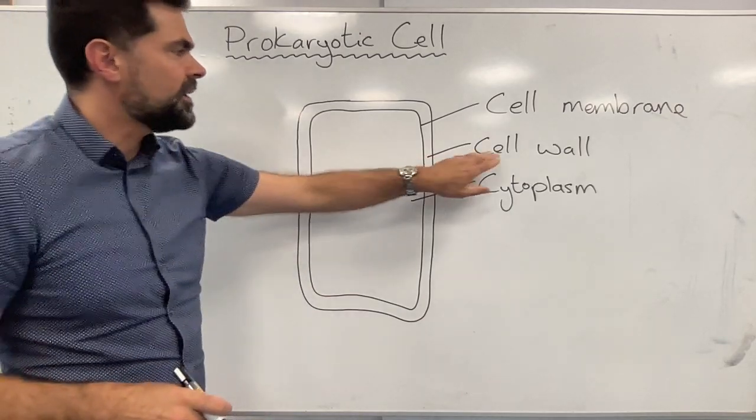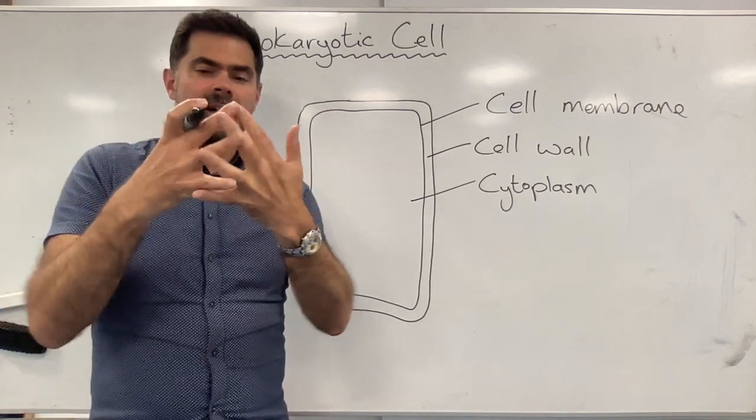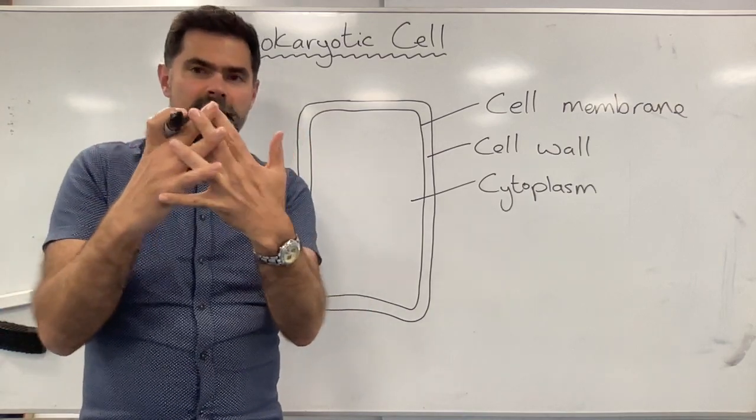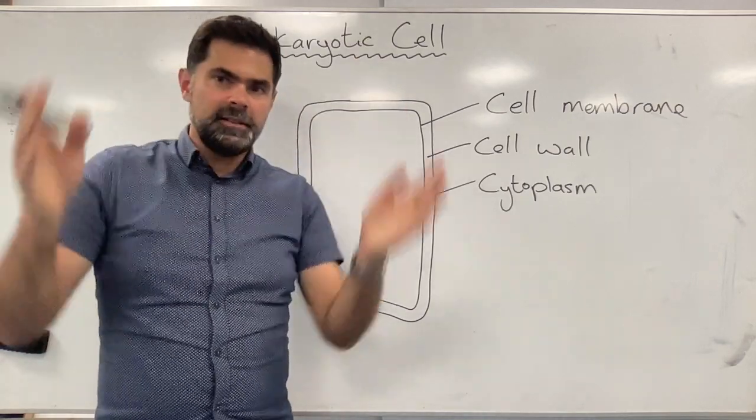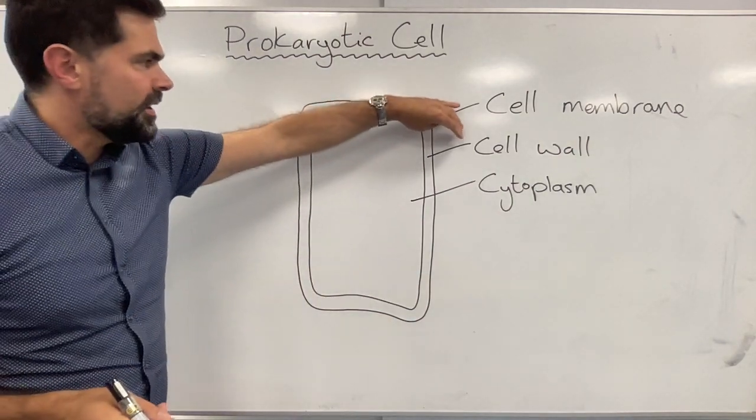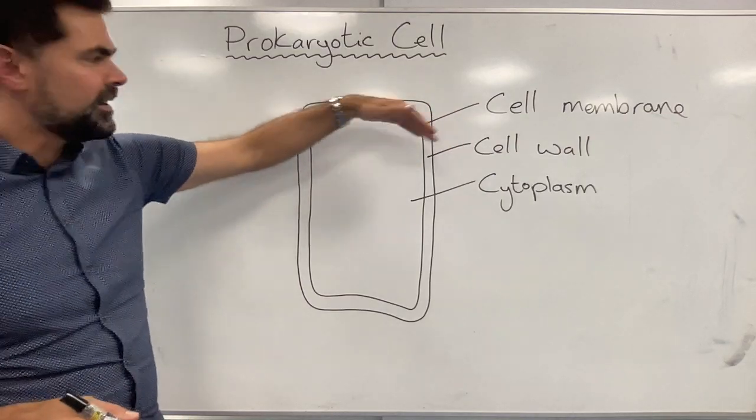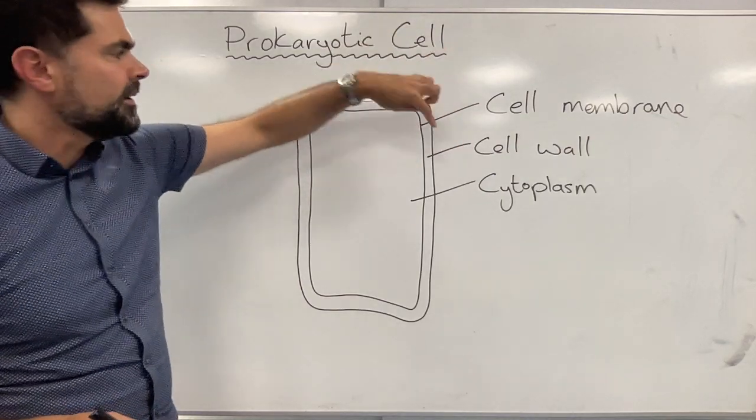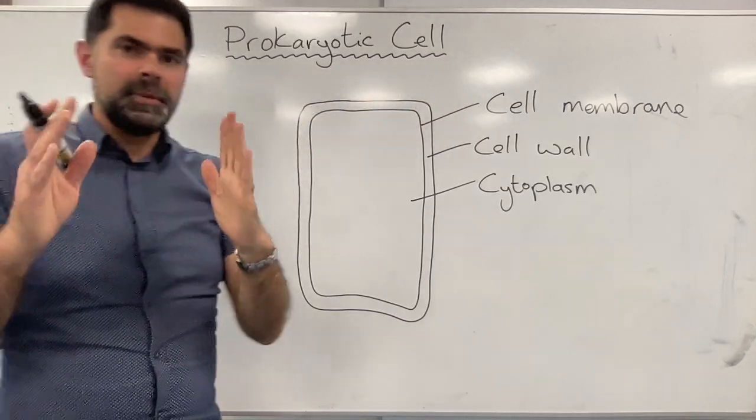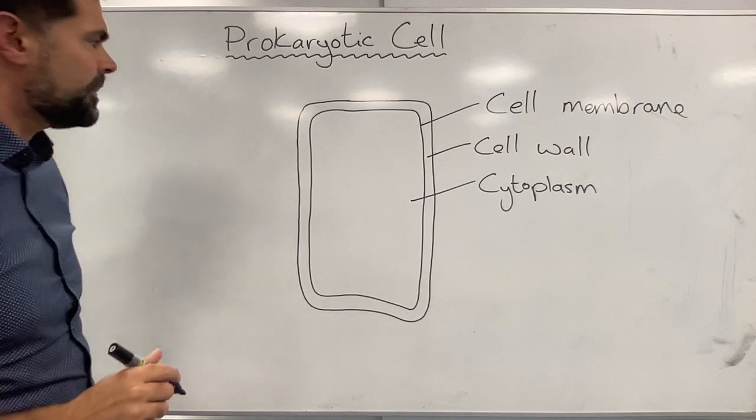I should have mentioned earlier the cell wall is a network like this that gives the cell a rigid shape. There's often a misconception that the cell wall protects the cell or controls what goes in or out. It doesn't. That's what the cell membrane does. The cell wall gives the cell rigidity and helps it maintain its shape.